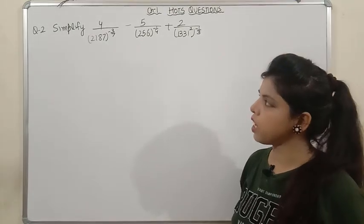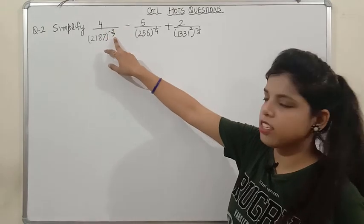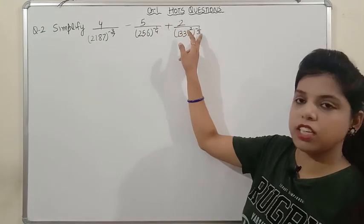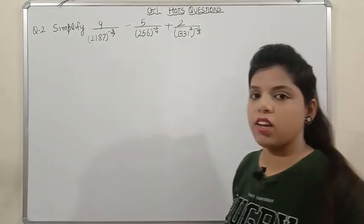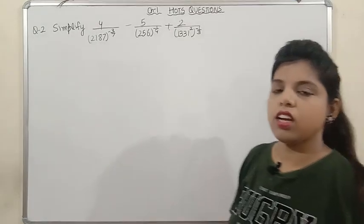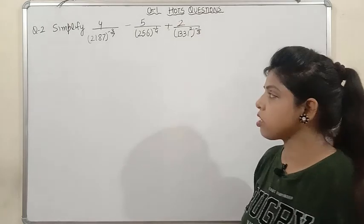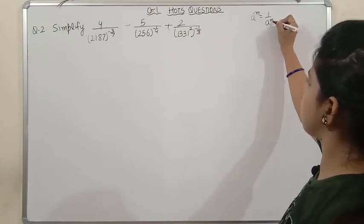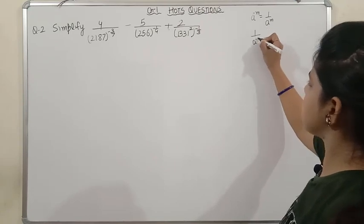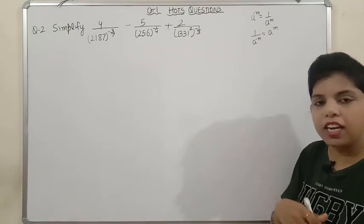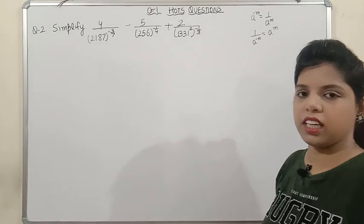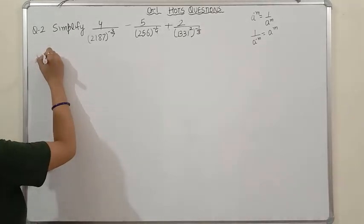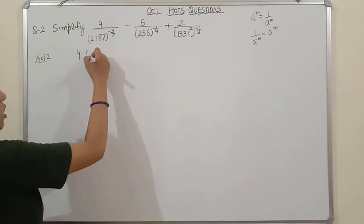Moving on to Question 2: Simplify 4 × (2187)^(−3/7) − 5 × (256)^(−1/4) + 2 × (1331)^(1/3) whole raised to power −1/3. You can see that all the numbers have negative exponents. The key idea is: when you shift a term from denominator to numerator (or vice versa), the power changes from negative to positive.